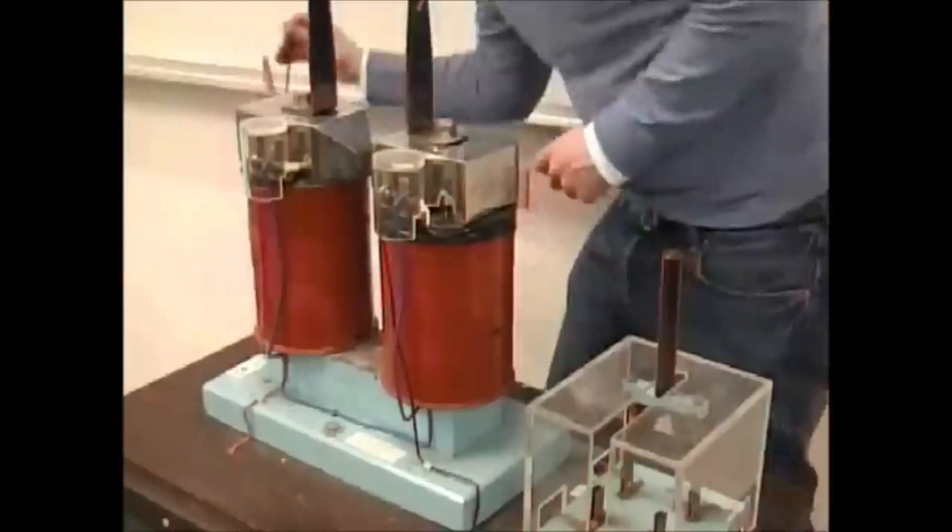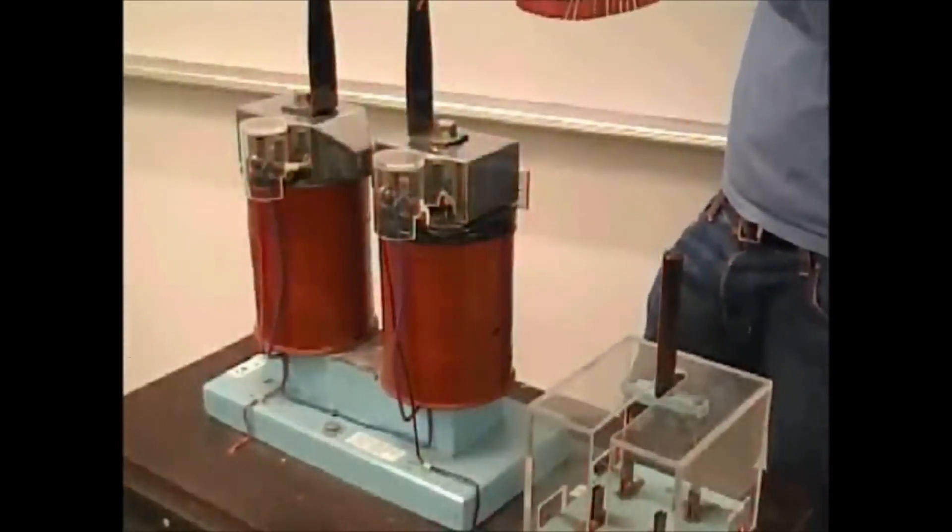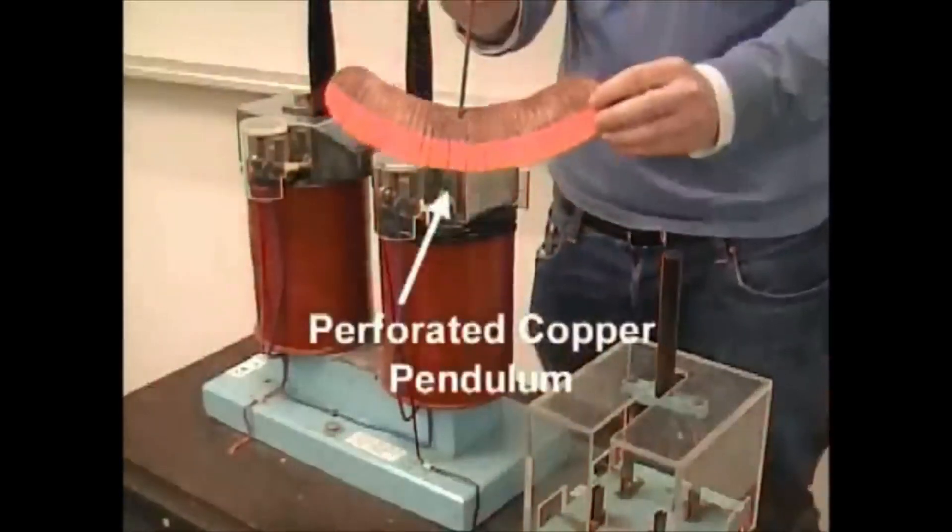The magnetic field induced in the metal attracts the falling magnet, creating resistance. This resistance is what slowed down your magnet.